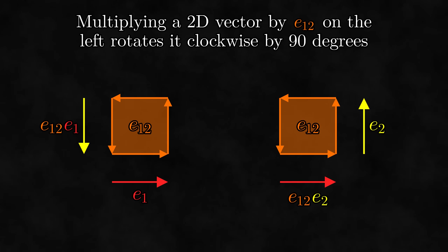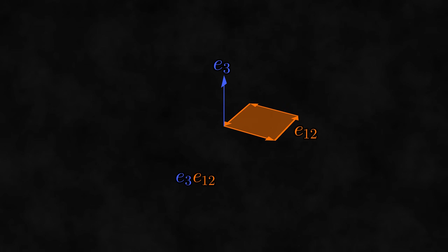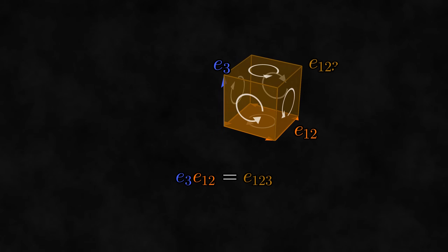But this has all been in two dimensions. What about multiplying a vector and a bivector in three dimensions? Let's consider the product e3 times e12. In this case, there are no common directions at all, so we join, combining e12 and e3 into e123. I haven't really talked about how to visualize trivectors, but here's how I usually draw them — I'll talk more about this visualization in a future video. When multiplying a vector that is perpendicular to a bivector, they join into a trivector. In this case, the sign is hard to figure out geometrically, and I always let the algebra do the talking when it comes to the sign. Here, the result is e123, not minus e123.